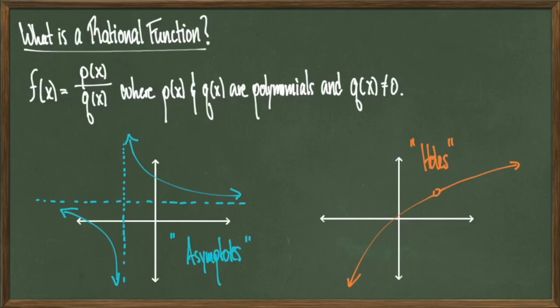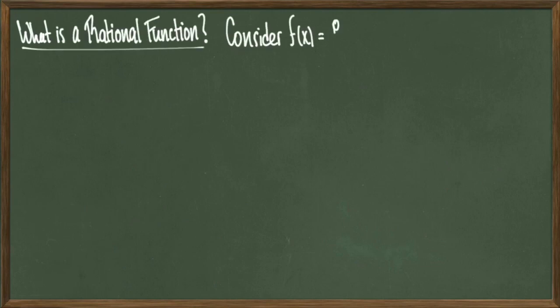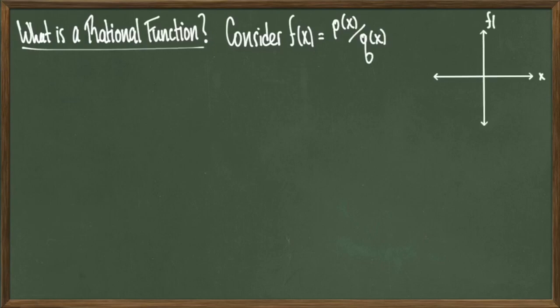But let's go ahead and talk about when such phenomena occur. We'll use the same setup: let f of x equal to p of x over q of x, and just assume that the picture on the upper right-hand part of the screen is just a general picture. Again, not every rational function looks exactly like this, but let's start talking about asymptotes.